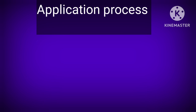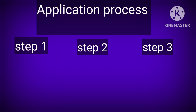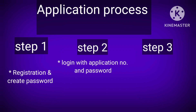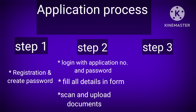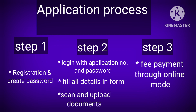For the application process, there are three steps. Step 1 is registration — complete the registration and create a password; you will be given an application number. Step 2 is to log in using your application number and password, fill in all the application form details, and upload scanned documents. Step 3 is fee payment.